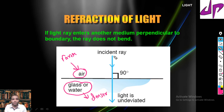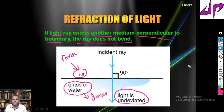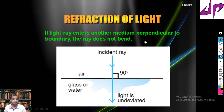Suppose when light falls on the medium perpendicularly — meaning there is no angle with the surface, it falls exactly at 90 degrees — the light does not deviate; it is called undeviated. So in refraction, if a light ray enters another medium perpendicular to the boundary, the ray does not bend.